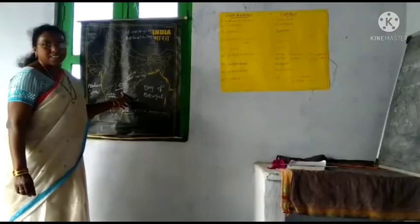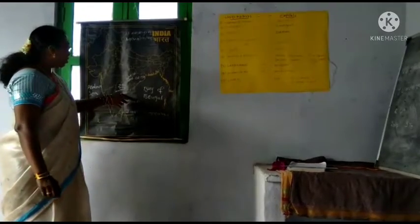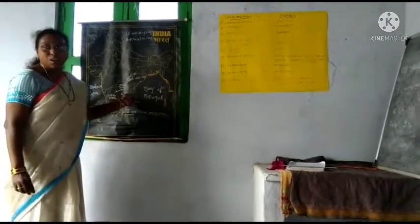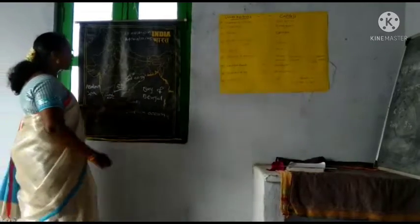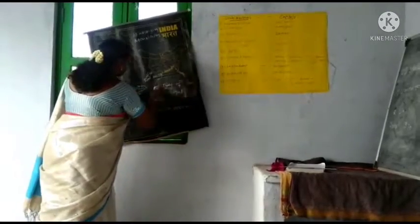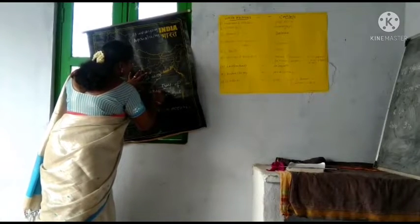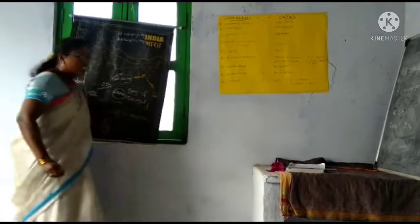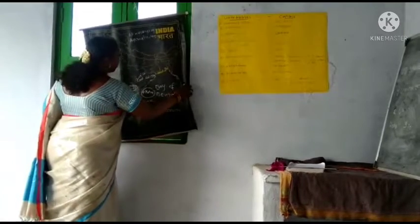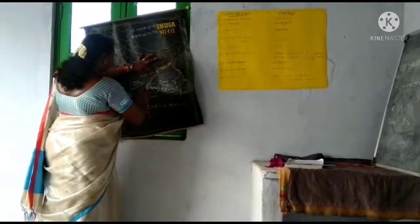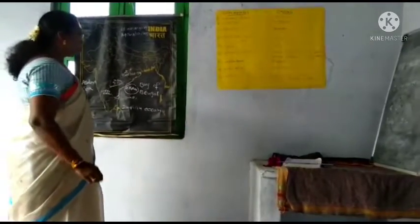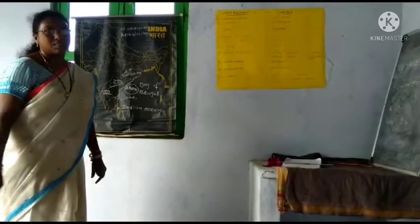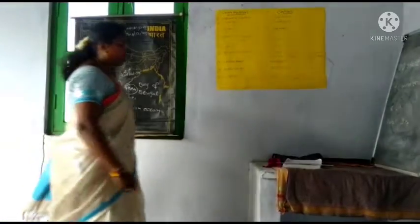Andhra Pradesh has the second longest coastline in India after Gujarat, of about 974 kilometers. This is the coastline of Andhra Pradesh. Next, formation of Andhra Pradesh.